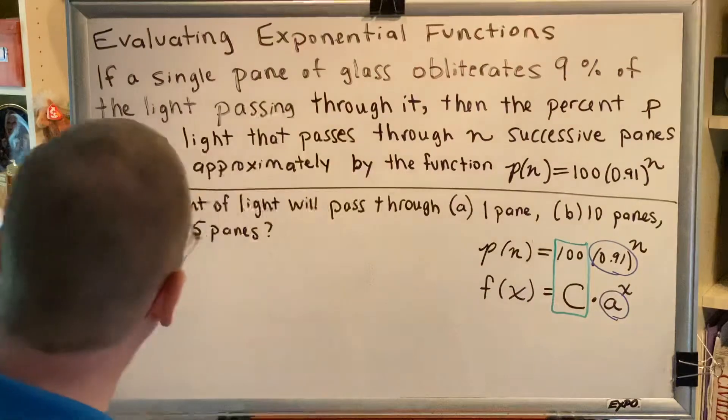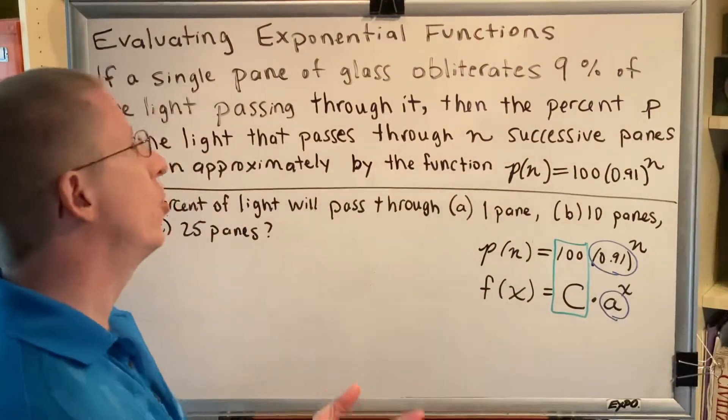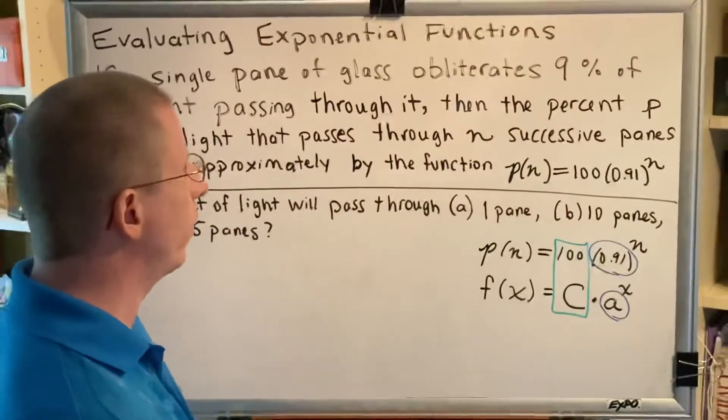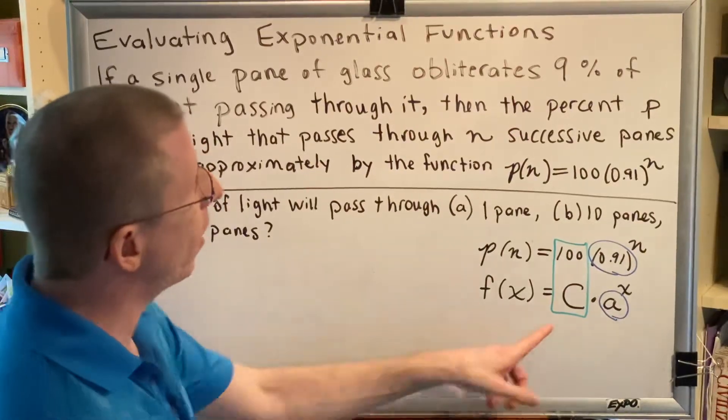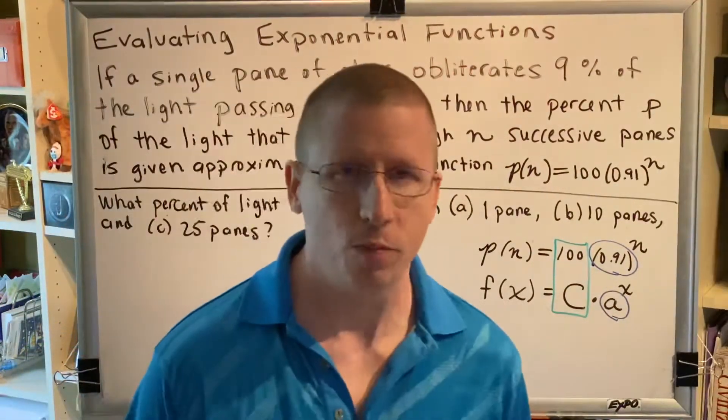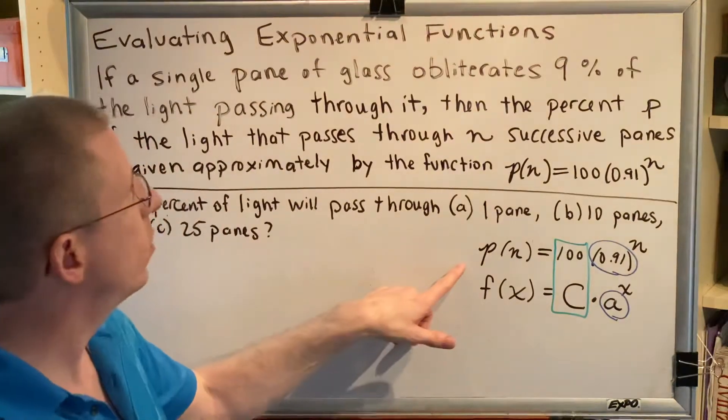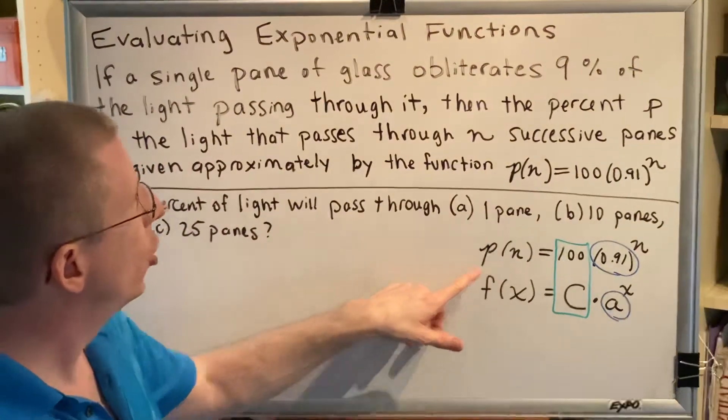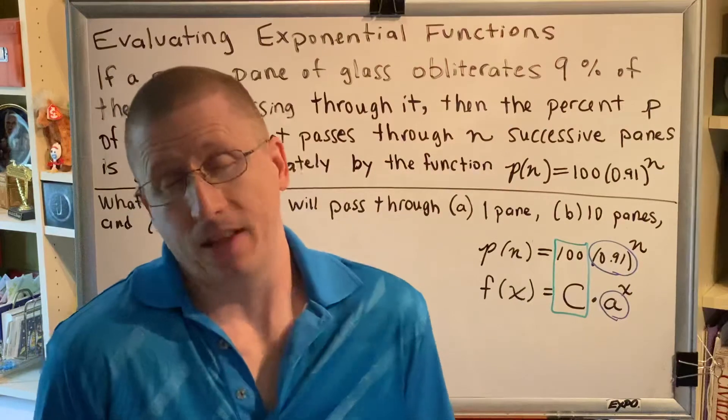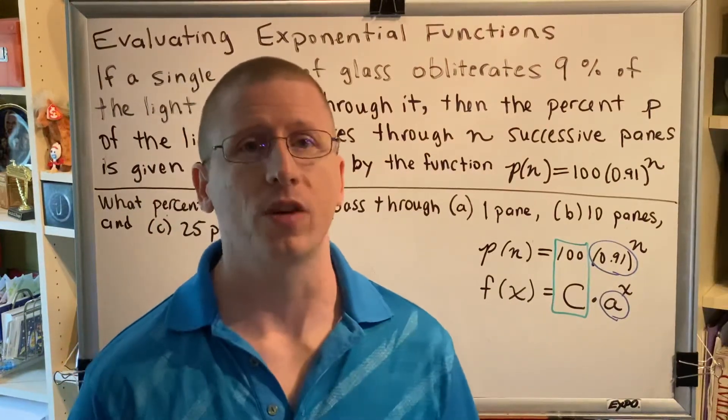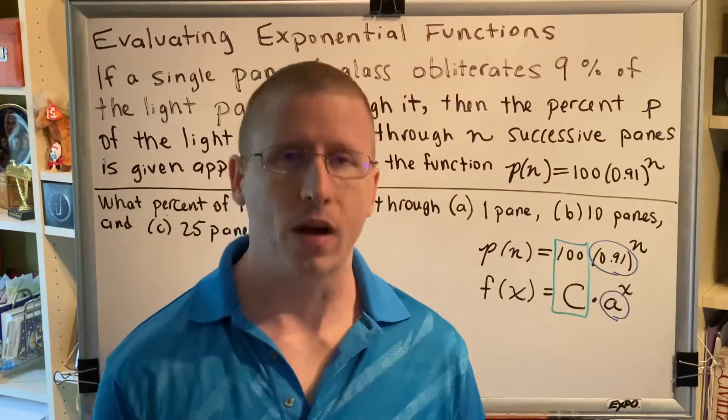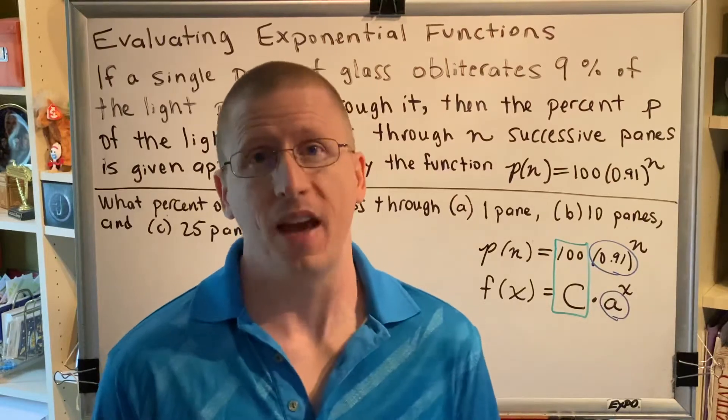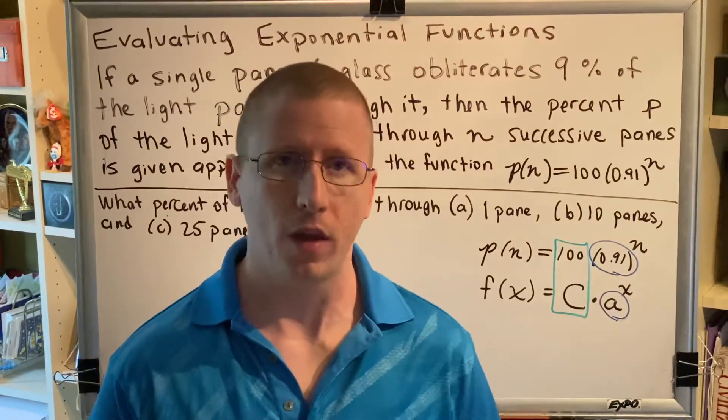Before we begin solving this problem, let's talk about how understanding this definition will help us solve this problem more effectively. So let's think about what's going on here. Capital C is 100, and in this problem we're told that the function is measuring the percent of light. So the initial value was 100%. That makes sense. When you first shine a light source at a piece of glass, what comes out of the light source is 100%. It's all of the light that you are starting with.